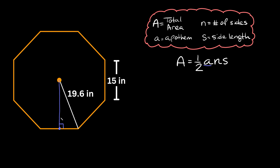What we've basically created here is a right triangle. One of the lengths on this right triangle is the hypotenuse at 19.6 inches, and we're looking for this distance — the apothem — which I'll label as x. Since each side is 15 inches long, half of that side is 7.5 inches.